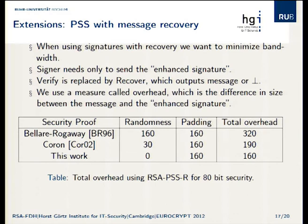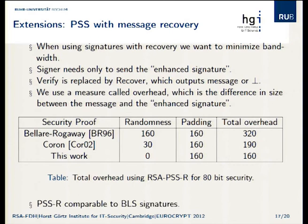How do we measure the space savings? We use what we call the overhead — essentially the difference in size between the message and the enhanced signature. Bellare and Rogaway needed 160 bits of randomness and 160 bits of padding, giving a total overhead of 320 bits. Coron improved this and required less randomness. With our proof, it's completely independent of the randomness, so we can omit the randomness entirely. With 160 bits of padding — coming from the birthday paradox for 80-bit security — PSSR signatures turn out to be comparable to BLS signatures, which is quite an interesting finding.